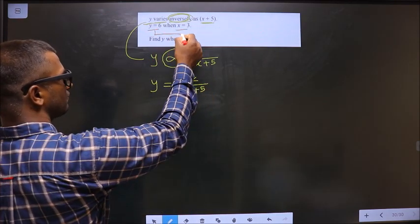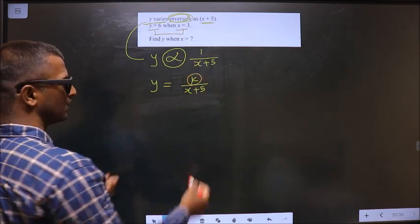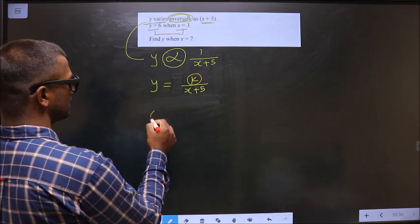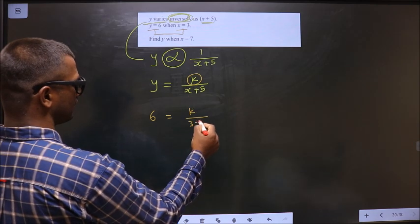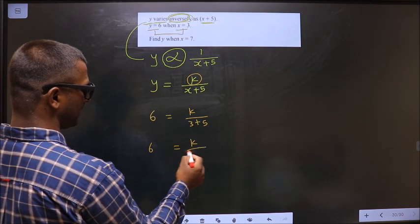Now by making use of these values, I will calculate k. Let us replace the values here. I get 6 equals k by x is 3, 3 plus 5. So 6 equals k by 8.